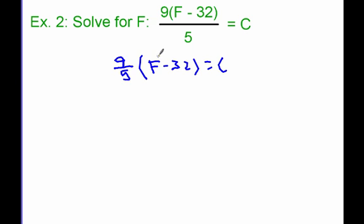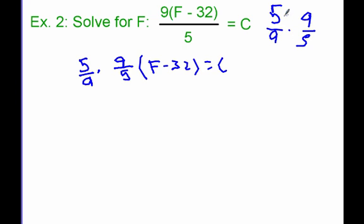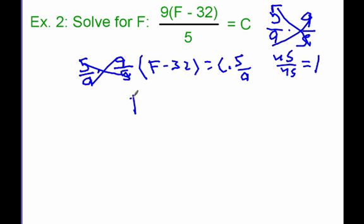Looking at this, instead of multiplying out 9 fifths times f and 9 fifths times 32, I can just get rid of the 9 fifths by multiplying by its reciprocal, which is 5 ninths. Because 5 ninths times 9 fifths: 5 times 9 is 45 and 9 times 5 is 45, so 45 divided by 45 is 1 — they cancel each other out. So multiplying both sides by 5 ninths, the 9 fifths cancels, and I'm left with f minus 32 on the left equals 5 ninths times c on the right.